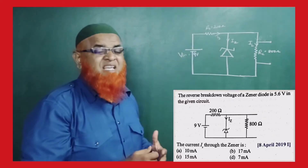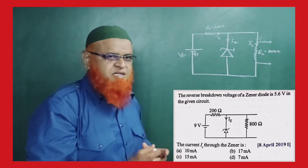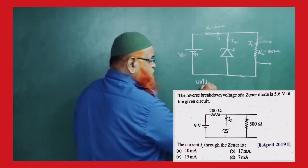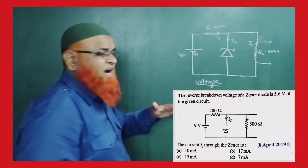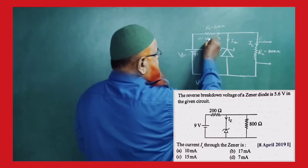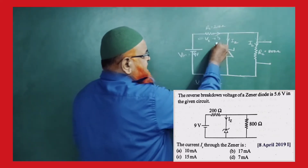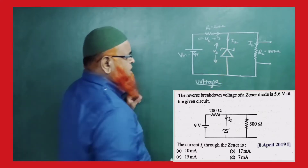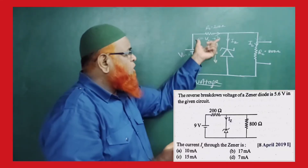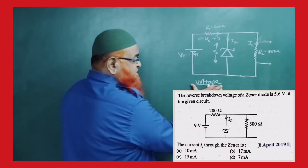Let me discuss in detail about what this Zener diode is going to do. The Zener diode is going to work as a voltage stabilizer. The input voltage gets divided into two parts: one is the voltage across the series resistance, and the other is the voltage across the Zener diode.